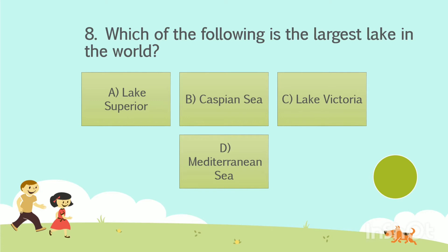Question number 8. Which of the following is the largest lake in the world? Option A: Lake Superior. Option B: Caspian Sea. Option C: Lake Victoria. Option D: Military Union Sea. Your time starts now. The answer is Option B, Caspian Sea.